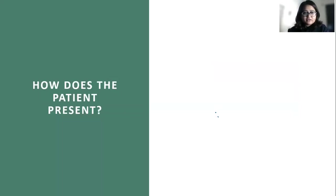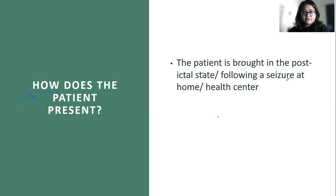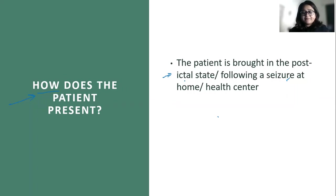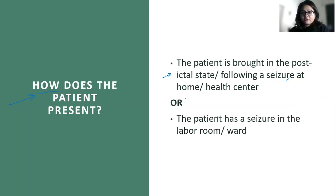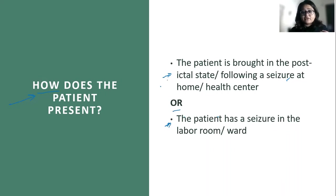There are two scenarios in which a patient can present in the labor room. One: the patient is brought in the post-ictal state — she's had a seizure at home or wherever she's been referred from and is brought to us following that seizure. This is a common scenario. Another scenario — which should not happen if the patient is with you — is the patient has a seizure in the labor room or in the ward. Remember, eclampsia is mostly a preventable condition; this should not happen if you have been managing her severe preeclampsia well.